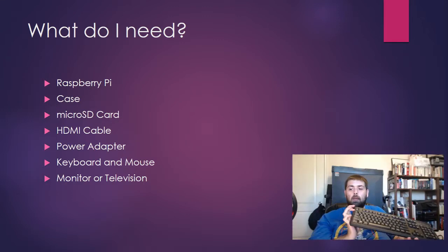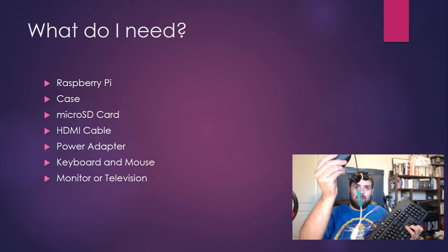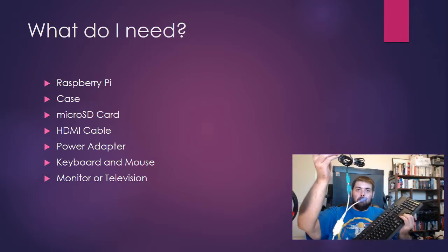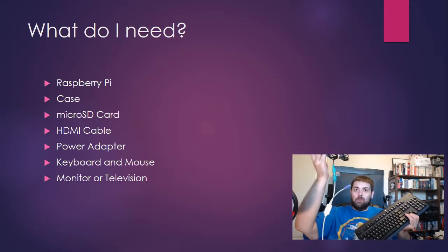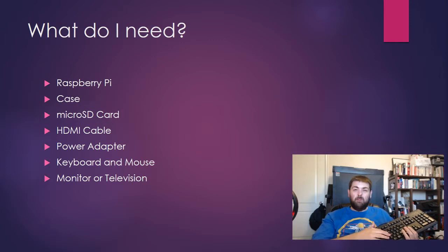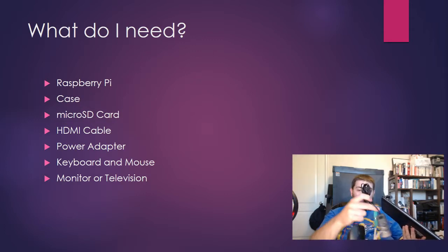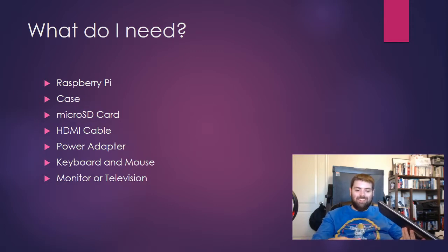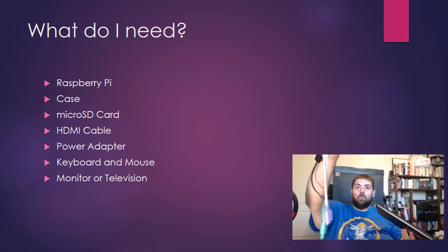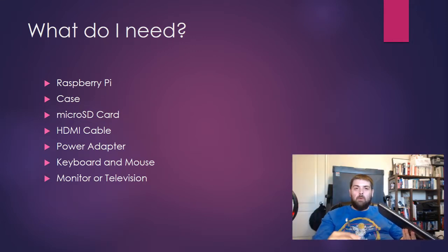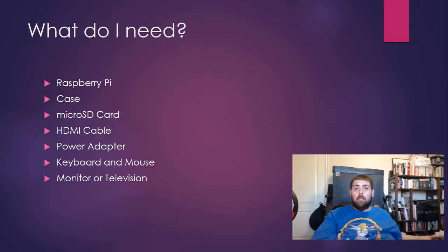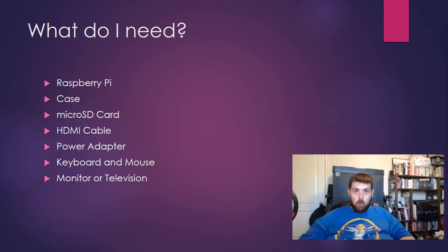You're also going to need a keyboard and a mouse. These are both PS2 — I know it's kind of old school, but I like the way this keyboard feels when I type on it, so I kept it. It came with one of my HP computers, and you can use a PS2 to USB adapter to connect it to the Pi, which means you're only using one USB port. And of course you're going to need a monitor or television — preferably one that has an HDMI port, which most modern monitors and televisions do these days.